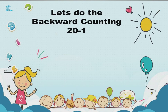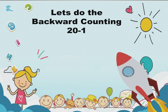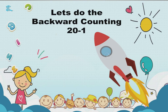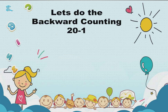Now let's do the backward counting 20 to 1 once again with the help of this spaceship. When you count 20 to 1, the spaceship will go into the sky. You should count fast now. Okay children, let's start! 20, 19, 18, 17, 16, 15, 14, 13, 12, 11, 10, 9, 8, 7, 6, 5, 4, 3, 2, 1 — Go!